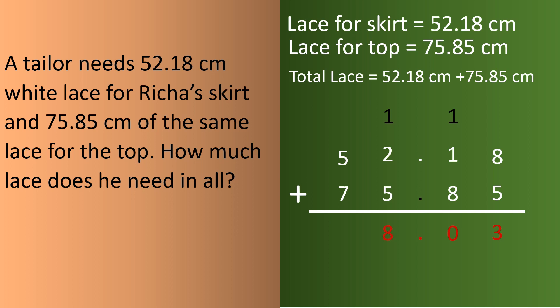Then 2 plus 1 is 3, plus 5 is 8. Then 5 plus 7 is 12 — write 2, carry 1. And 1 as it is. So the answer is 128.03. He needs 128.03 cm of lace in all.